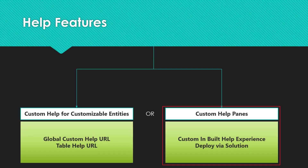In a previous video we discussed another feature within Dynamics 365 called custom help for customizable entities, where we used a combination of a global custom help URL and a table help URL. In this video we are going to discuss custom help panes, where you can use tools available within Dynamics 365 to build a help experience within the system itself, and you can also deploy these built-in experiences via solutions to your higher environments, just like normal solution deployment.